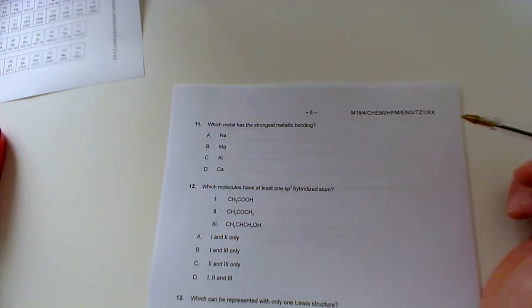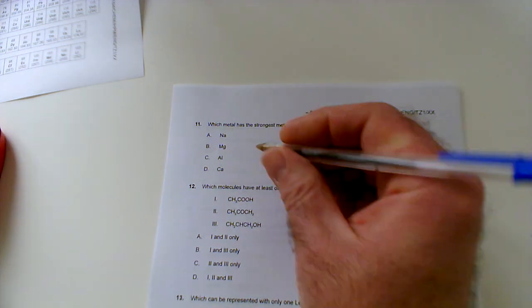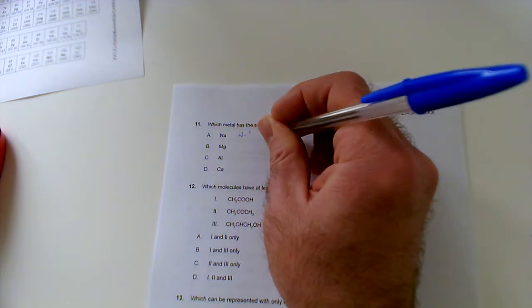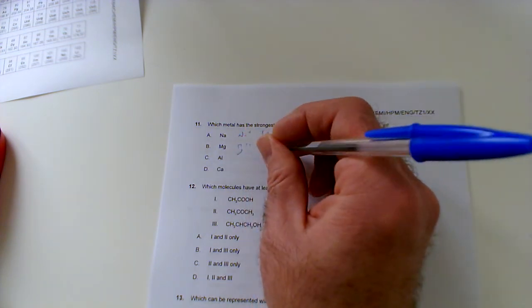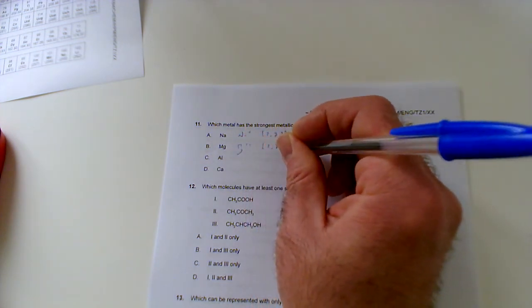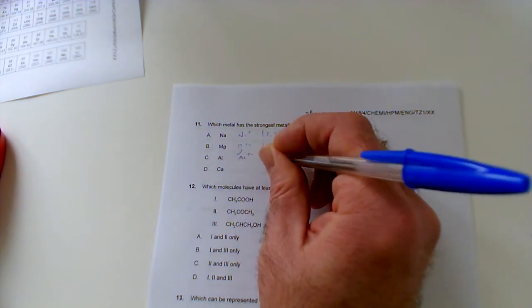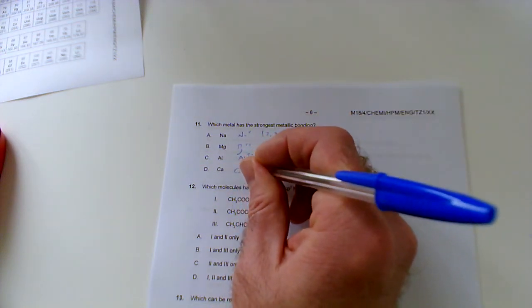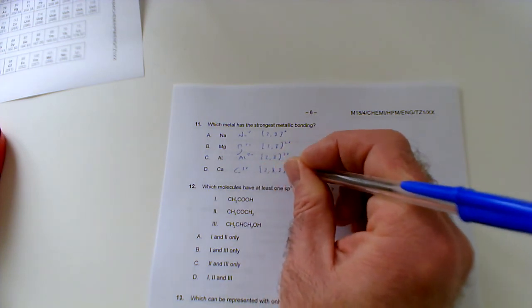Okay, here's the next video then folks for 2018 high level time zone one paper one. Which metal has the strongest metallic bonding: sodium, magnesium, aluminium, or calcium? If we simplify this down, that's going to be Na+ which is basically 2,8+. Then Mg2+ which is 2,8 but two plus. This is Al3+ which is going to be 2,8 as well but now three plus, and then calcium of course would be Ca2+ because it's in group two, so that would be 2,8,8 two plus.